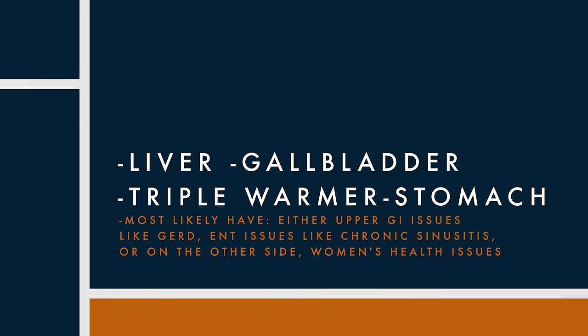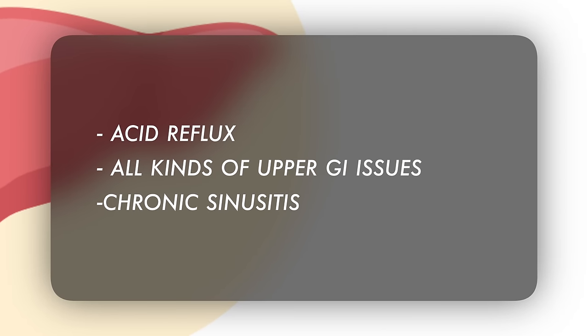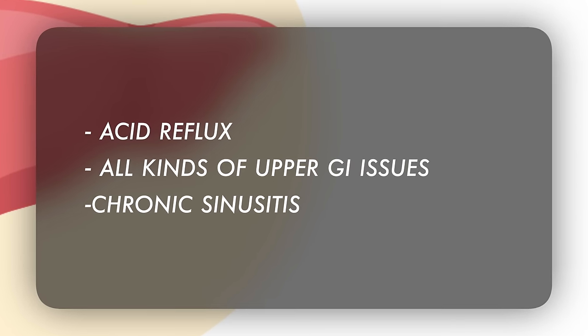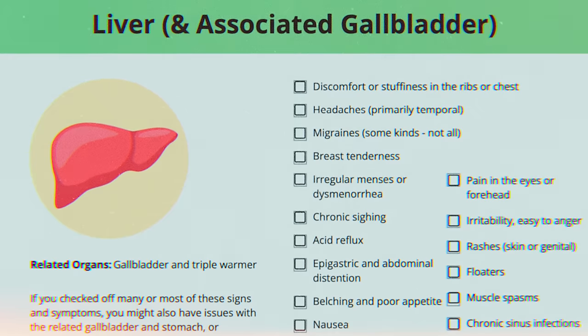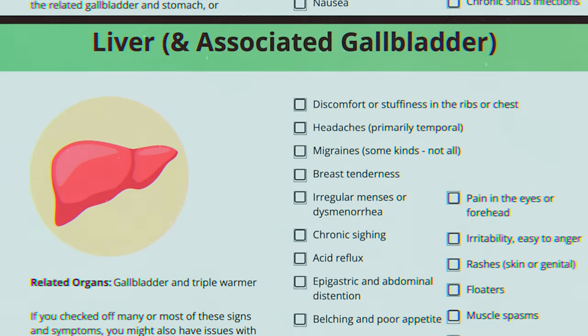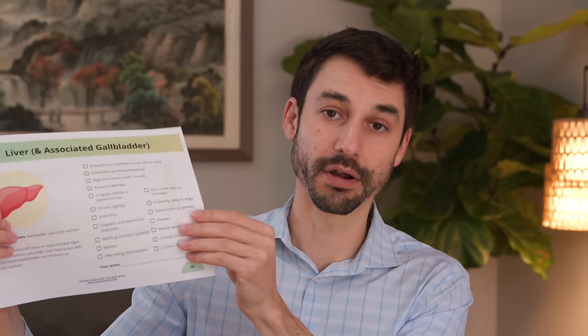The final organ network: the liver, gallbladder, and the triple warmer. The triple warmer is the only organ in traditional Chinese medicine with no anatomical correlate — it explains several zones of the body and larger physiological functions. The most common symptoms I see related to the liver and gallbladder include acid reflux, GERD, and all kinds of upper GI issues. You also see chronic sinusitis. Paradoxically, you see bowel issues and women's health issues too — irregular menses, painful menses, dysmenorrhea, women who get three cycles a year, and varying kinds of PCOS sometimes relate to what we call liver blood stasis.